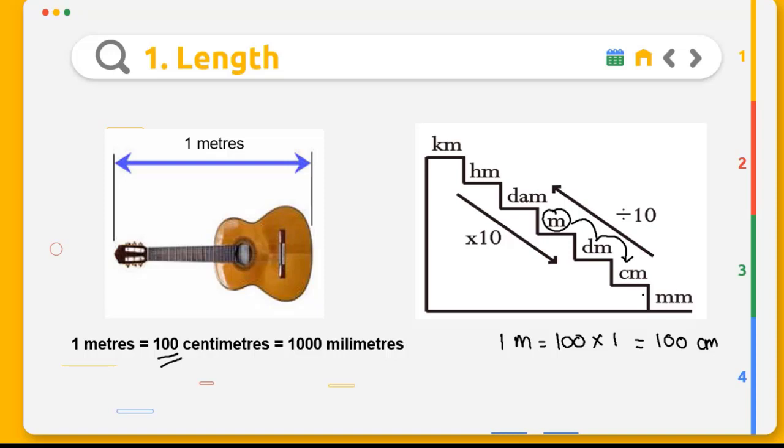If you want to convert meter to millimeters, we have to go down three steps. That means we multiply by 1000, so it equals 1000 millimeters.